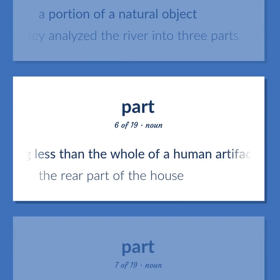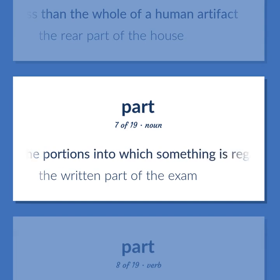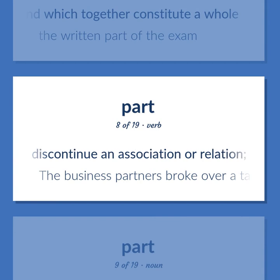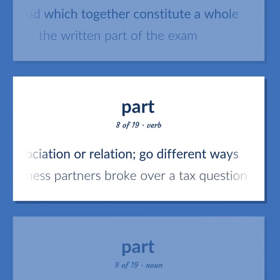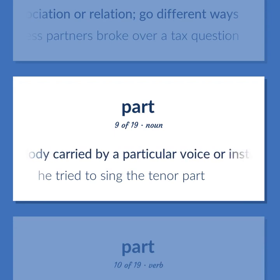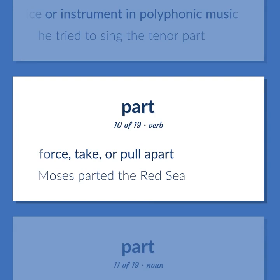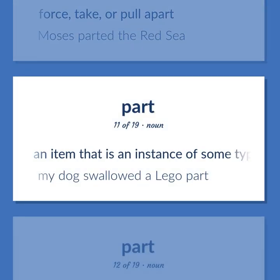Part: something less than the whole of a human artifact. Example: The rear part of the house. One of the portions into which something is regarded as divided and which together constitute a whole. Example: The written part of the exam. Part (verb): to discontinue an association or relation; go different ways. Example: The business partners broke over a tax question. The melody carried by a particular voice or instrument in polyphonic music. Example: He tried to sing the tenor part. Part (verb): force, take, or pull apart. Example: Moses parted the Red Sea. An item that is an instance of some type. Example: My dog swallowed a Lego part.